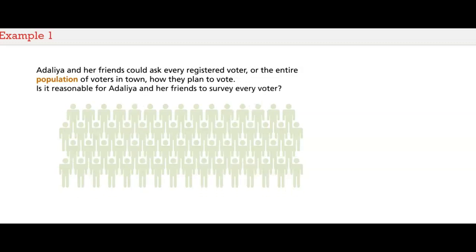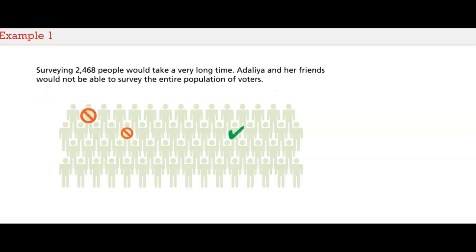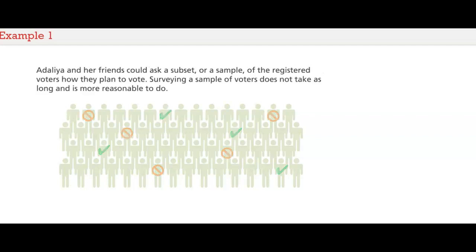Is it reasonable for Adalia and her friends to survey every voter? Surveying thousands of people would take a very long time, so Adalia and her friends would not be able to survey the entire population of voters. Instead, they could ask a subset, or a sample, of the registered voters how they plan to vote. Surveying a sample of voters doesn't take as long and is more reasonable to do.